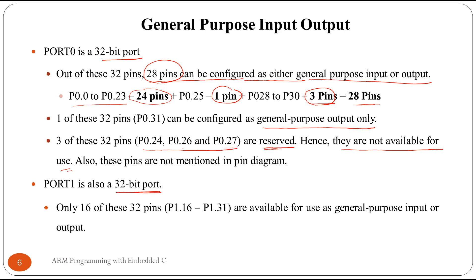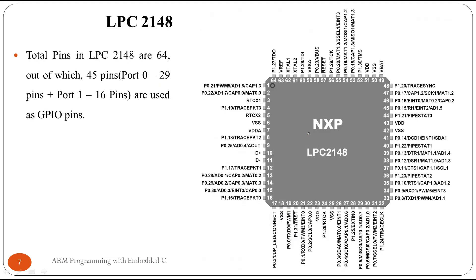Port 1 is also a 32-bit port, but only 16 of its 32 pins are usable — specifically P1.16 to P1.31. Pins P1.0 to P1.15 are not available on LPC2148. If we calculate the total GPIO pins available: Port 0 provides 29 pins and Port 1 provides 16 pins, giving us a total of 45 GPIO pins that can be defined as input or output.